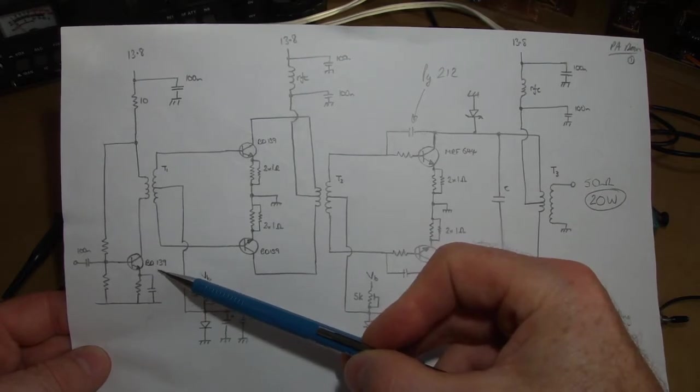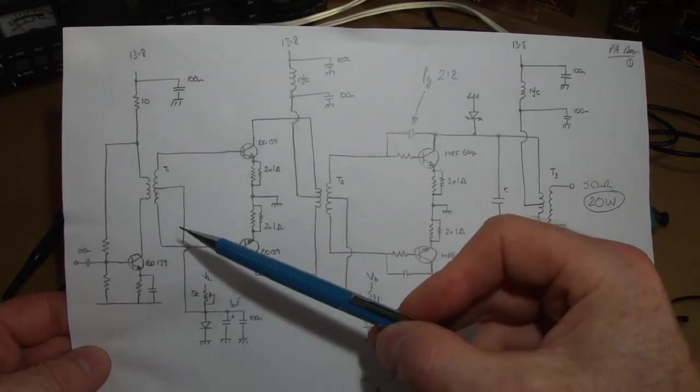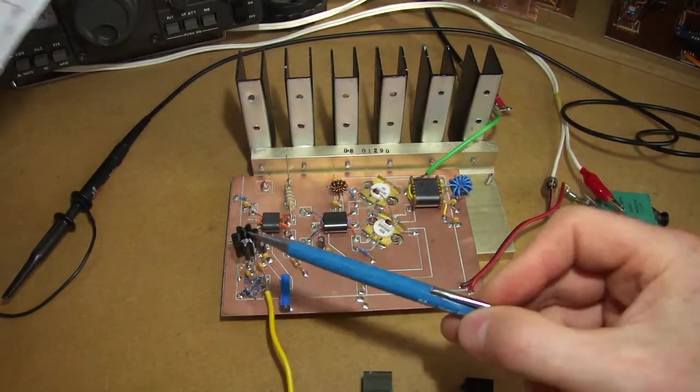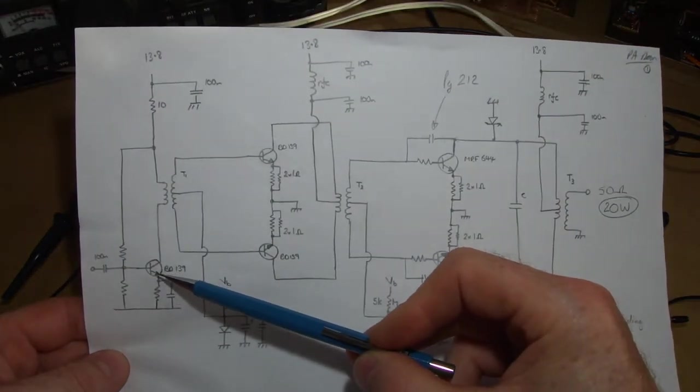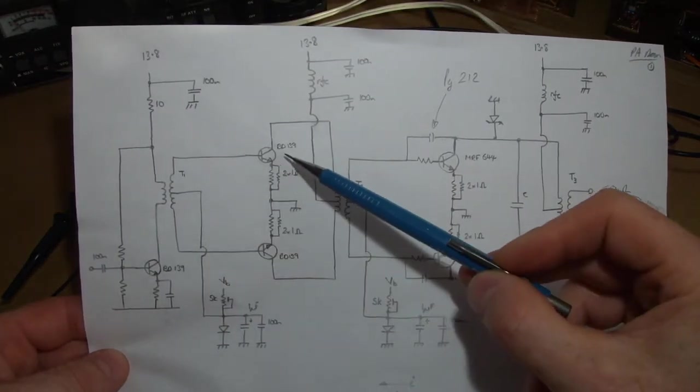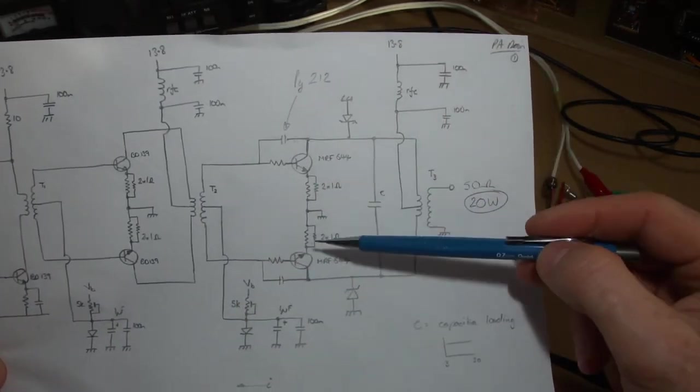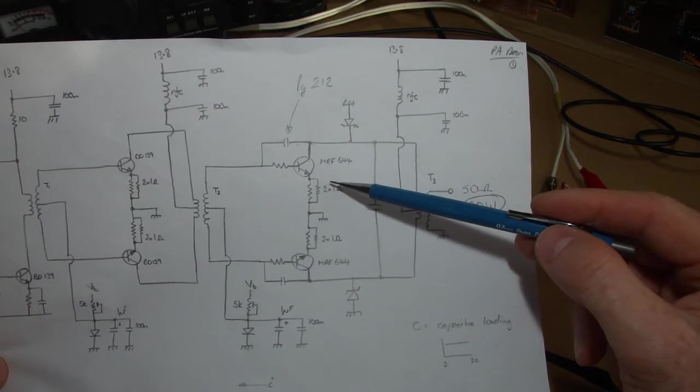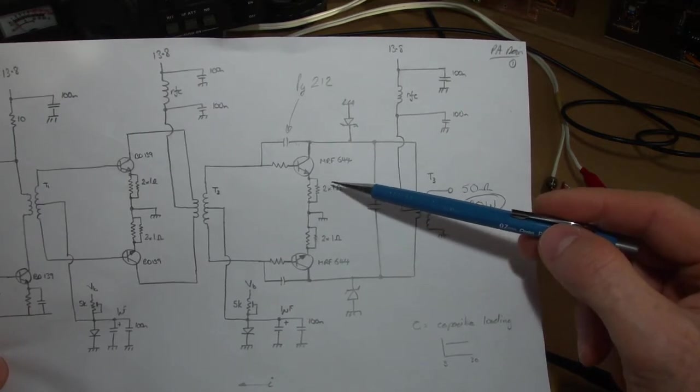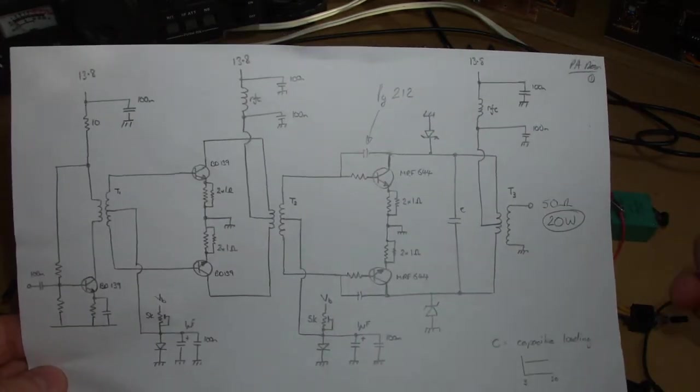Using a BD139 for the driver, in this particular case, which we'll go over in a sec, I ended up just using other junk box, a 2N3053. And then the two BD139s in a push pull, then feeding into the two MRF644s. So that's what I was thinking about doing on that last video.